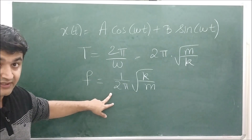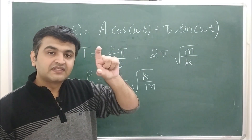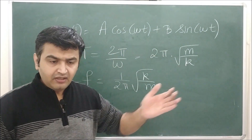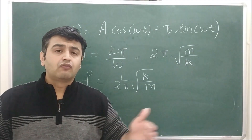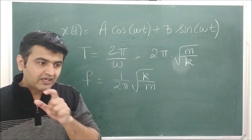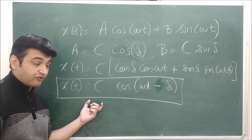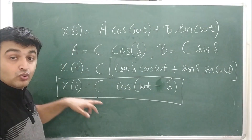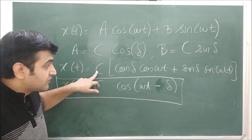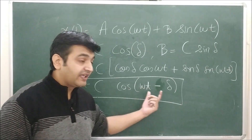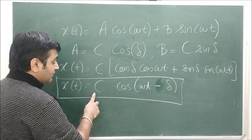There is another way to write the solution. Since the solution involves sine and cosine, one can ask about the amplitude and the phase shift. People rewrite the solution in the form x(t) = C·cos(ωt − δ). This is achieved by substituting A = C·cos(δ) and B = C·sin(δ), then using the identity cos(A)cos(B) + sin(A)sin(B) = cos(A − B). Here C is called the amplitude and δ is called the phase shift angle.